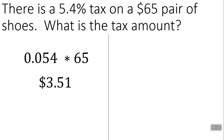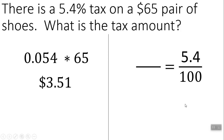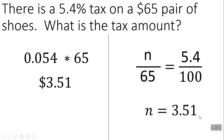If you do it as a proportion, you're going to have your 5.4% — don't do any decimal slides. Just stick 5.4 over 100. So for every $100 that you spend, you're going to be taxed $5.40. So out of $65, you go 65 times 5.4 divided by 100, and you get the same thing: $3.51.